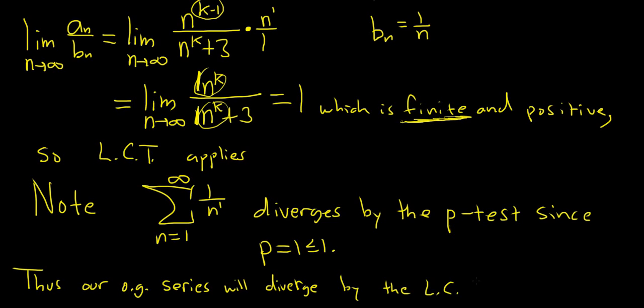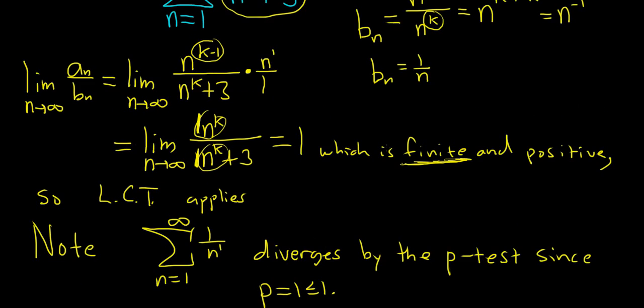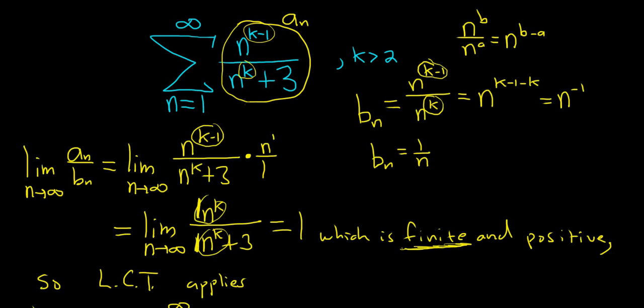So a lot of writing, that's one of the negatives about the limit comparison test. In my view, the worst thing about this test is all the writing that is required when you're writing up your solutions. It's just a lot of writing. You first have to identify your b sub n, which does require some skill. You take the limit.